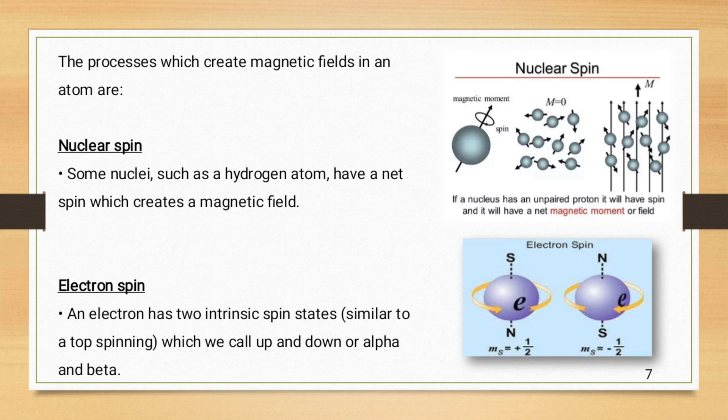As shown in the diagram, we can see that if the electron is moving or spinning in anti-clockwise direction, then it is shown by negative half and is called down movement or beta spin. If the electron is spinning in clockwise direction, then it is represented by a positive half and is called up movement or alpha spin of that electron.